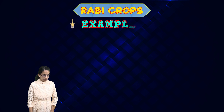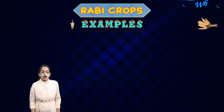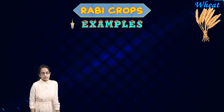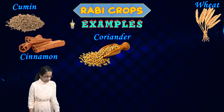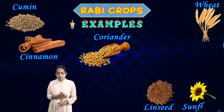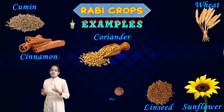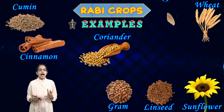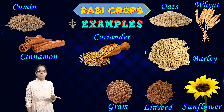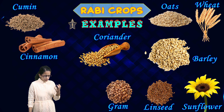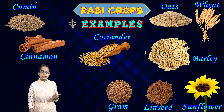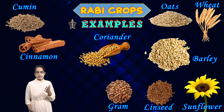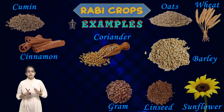Some examples of Rabi crops are wheat, then spices such as cinnamon, coriander, and cumin. You also have linseed, sunflower, gram, oat, and barley as important examples of Rabi crops grown during the Rabi cropping pattern.